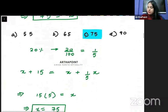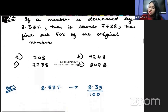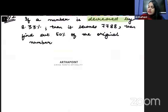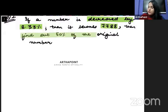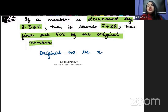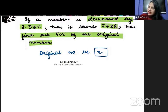Now the second question: if a number is decreased by 8.33 percent, it becomes 7788 — find 50 percent of the original number. Let the original number be X. When X is decreased, we are decreasing X by 8.33 percent.